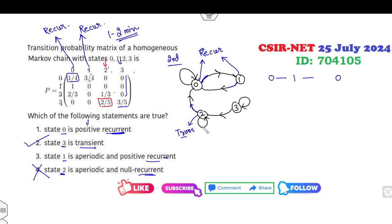Note: the self-loop does not count for this check — you think about it without the self-loop. State 3: if you leave from 3, can you come back to 3 via any path? No — so state 3 is also transient. Therefore, the option saying state 2 is recurrent is wrong. This concludes Method 2.